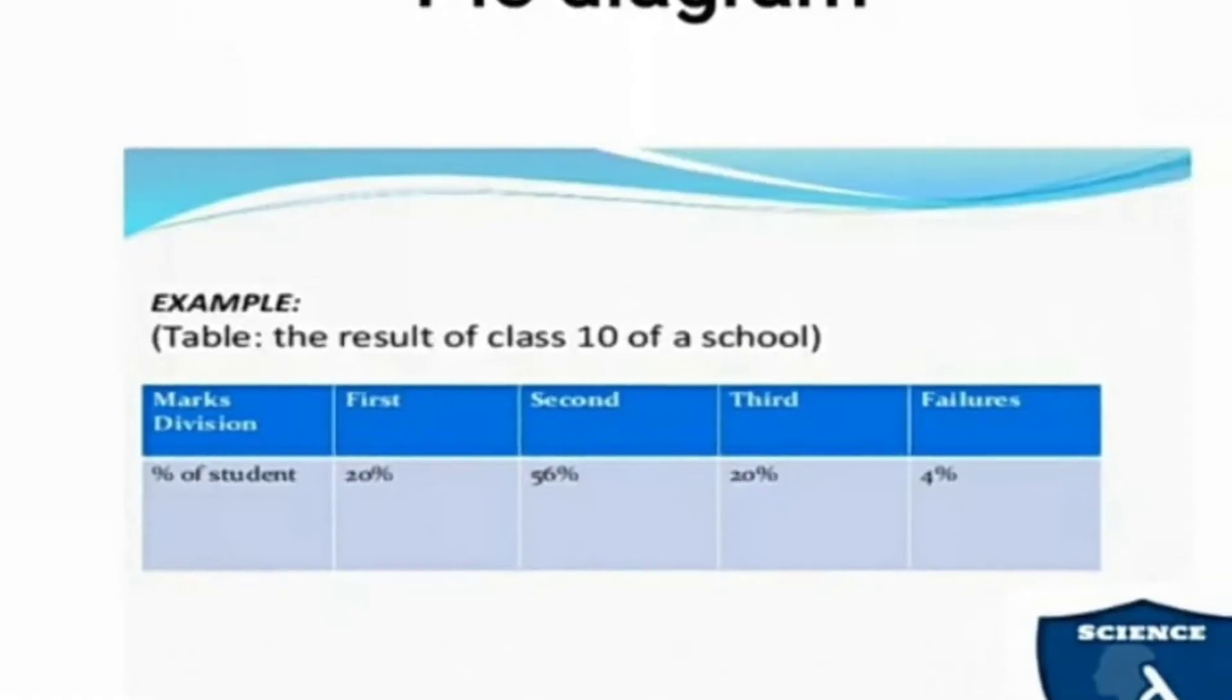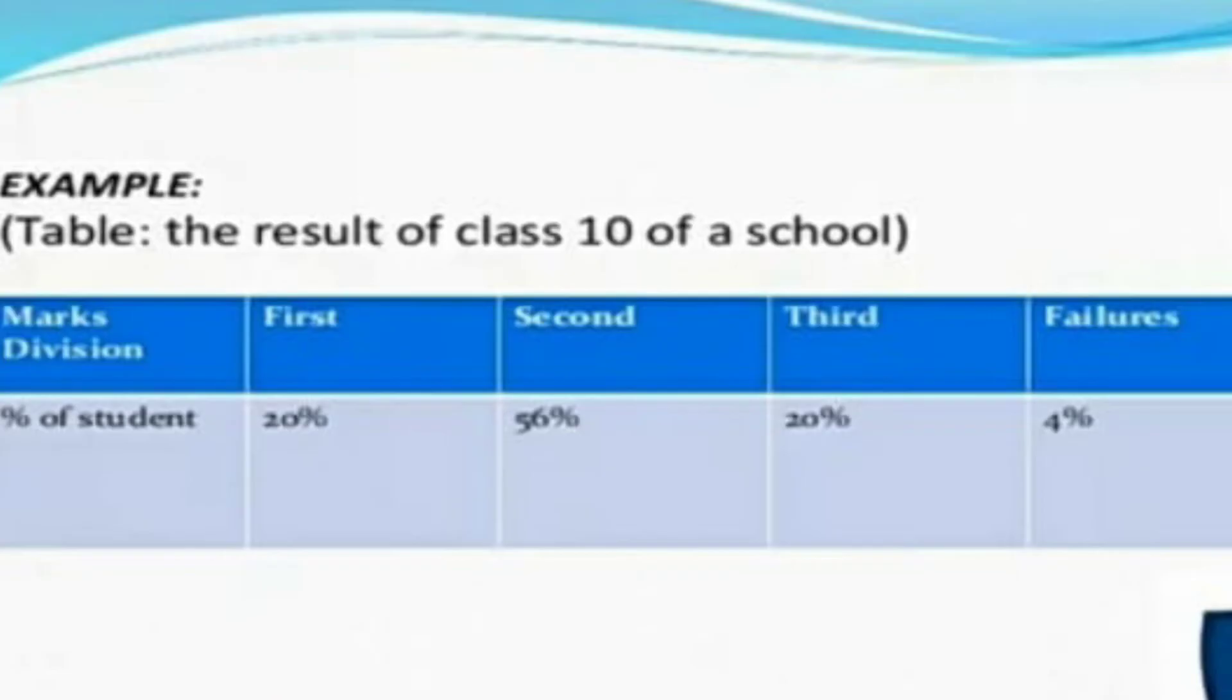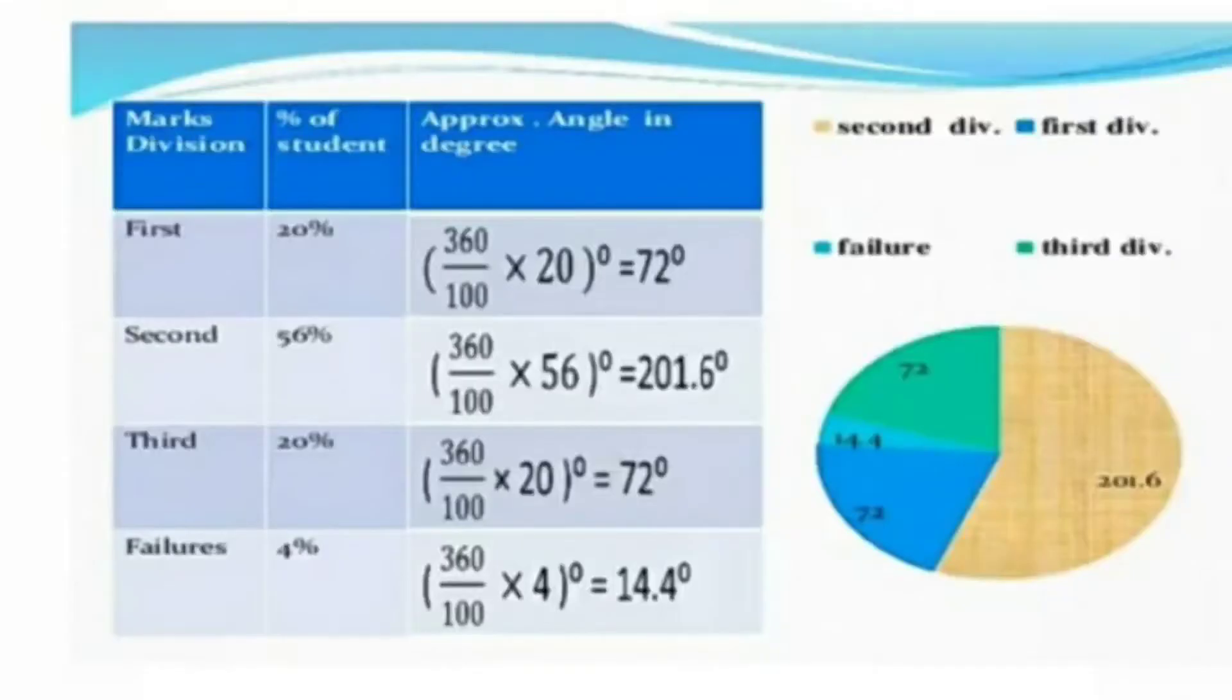Let's see an example for Pie Diagram. Number of students marks division: first class 20%, second class 56%, third class 20%, and failures is 4%. When you are adding all this it comes around 100%.